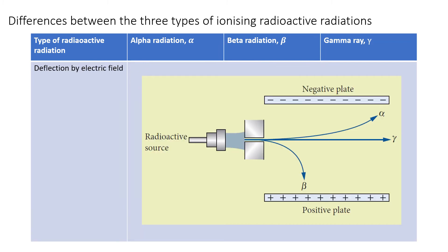Now let's look at the difference in deflection by electric field on these three different radiations. Charged particles are affected by electric field. An electric field is the area around a charged object — it forms a landscape for charged objects, rather like hills and valleys. This makes charges accelerate as they move in a potential gradient, just like a ball will accelerate if it rolls down a hill. If two parallel plates, one negative and one positive, form an electric field that particles from radioactive decay travel through, the charged particles will accelerate toward the plate with opposite charge. An alpha particle will accelerate toward the negative plate, and a beta particle will accelerate toward the positive plate. Gamma ray has no charge, so it is not affected and will continue on its straight path.